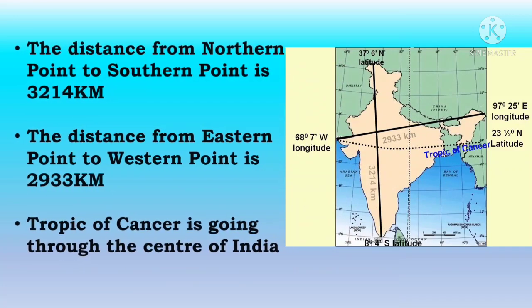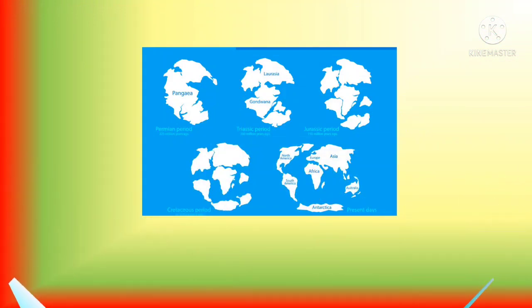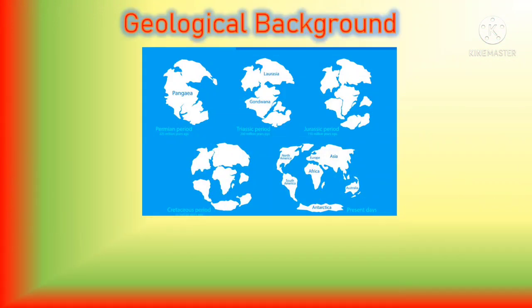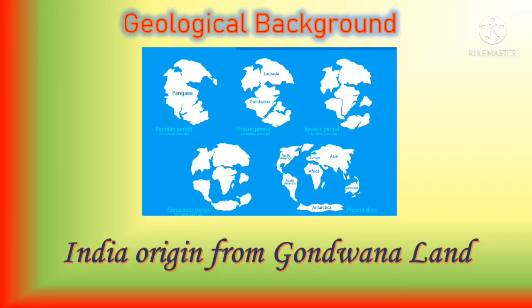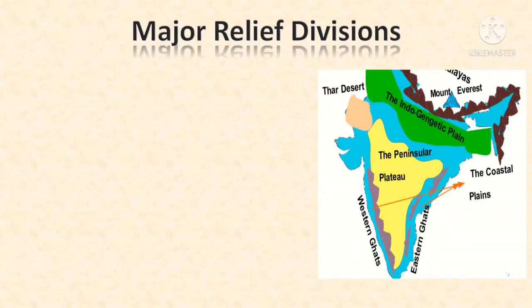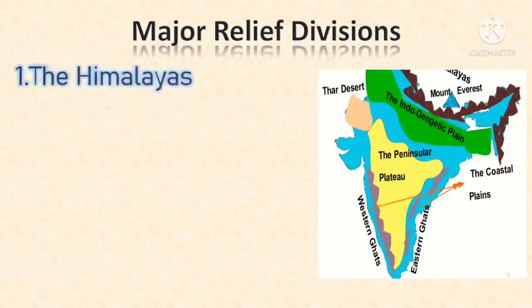The distance from the northern point to the southern point is 3,214 kilometers. The distance from the eastern point to the western point is 2,933 kilometers. The Tropic of Cancer passes through the center of our country. India's geological background originates from Gondwana land. The major relief divisions of our country are as follows.